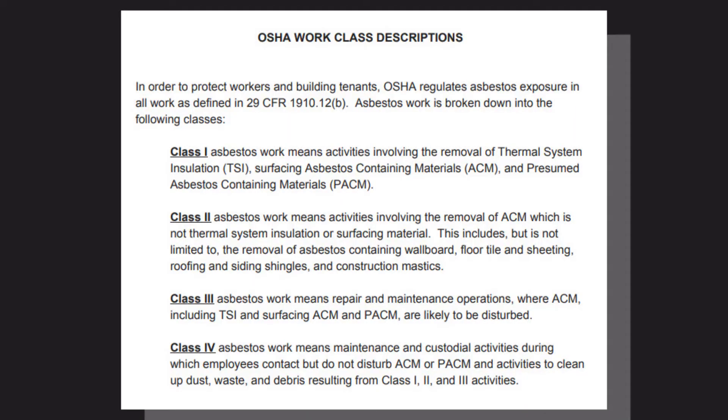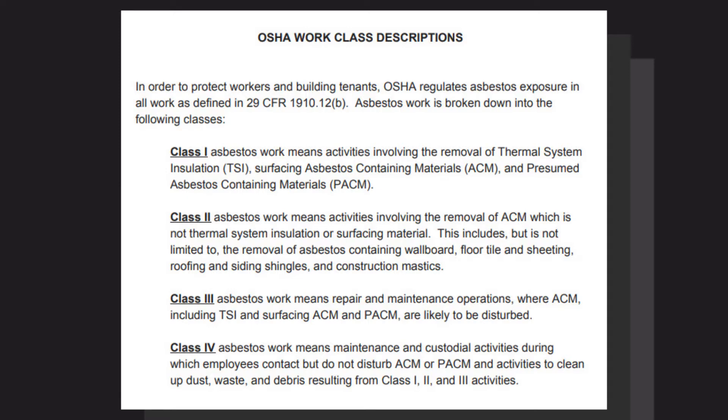Looking at asbestos — in Canada, for example, they classify asbestos work in three classes: Type 1, Type 2, Type 3, where Type 3 is the greatest risk. Here in the United States, we do it backwards — Class 1 through Class 4 — with Class 1 being the most dangerous and highest risk. I wish they would just use high, medium, low — plain, simple language would be so much nicer to understand.